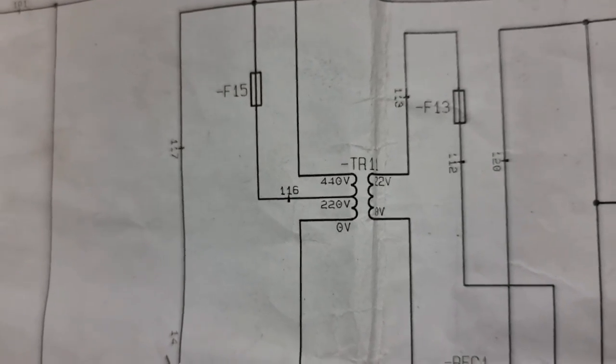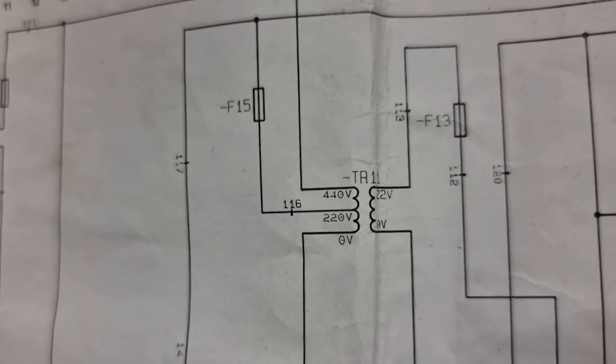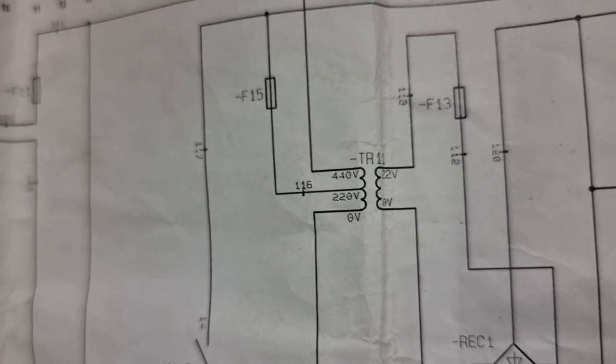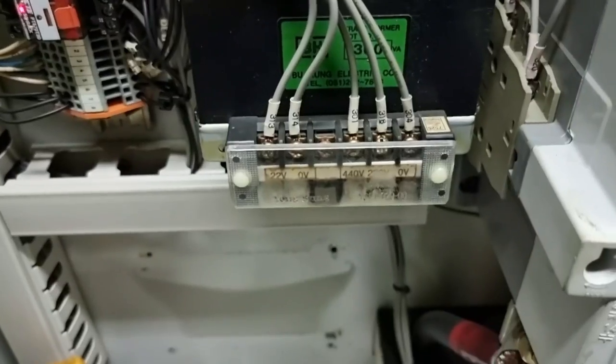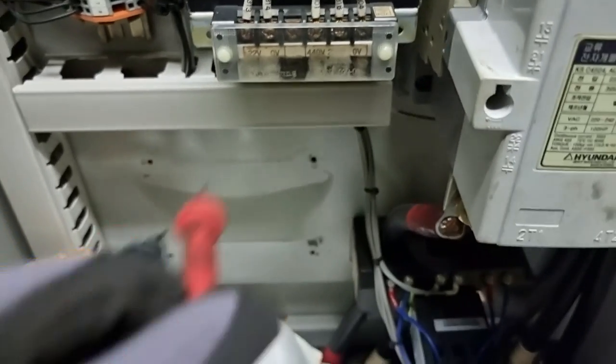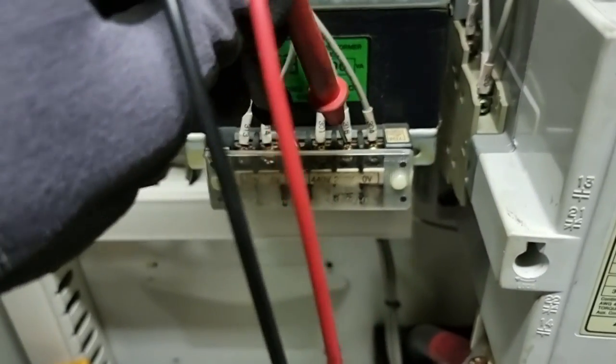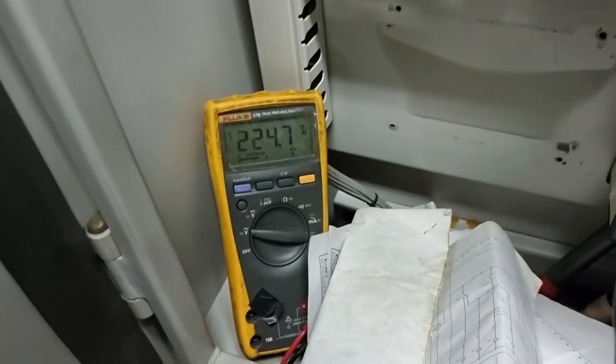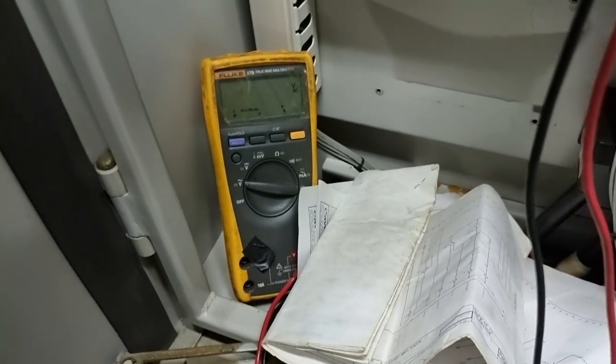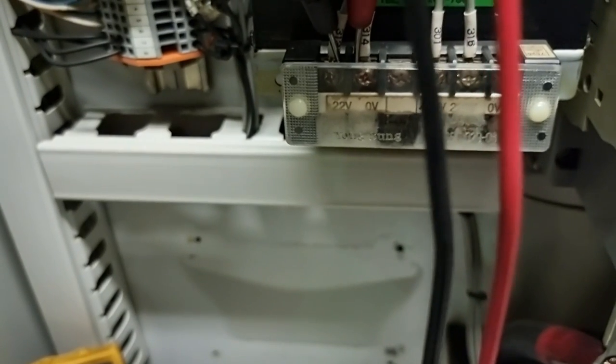After the fuses, we will now go to the transformer with an input of 440 volts and an output of 22 volts AC. As you can see, we have 440 volts input and a center tap of 220 volts, and an output of 22 volts AC.